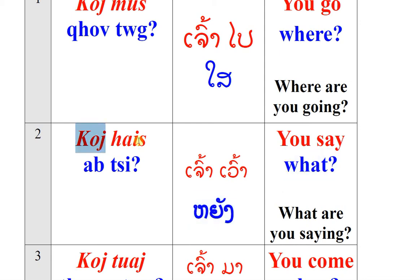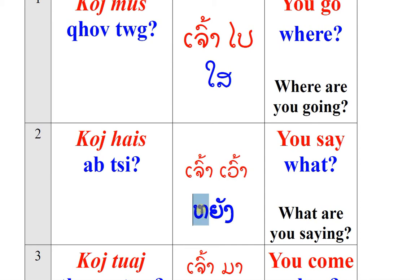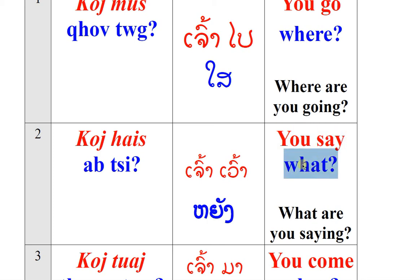Sentence: Co, hai, a chì. Co, hai, a chì. Chau, vào, nhãng. Chau, vào, nhãng. You, xê, what. You, xê, what.